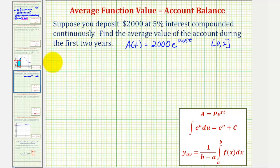Which means in this case, the average value of the account over the first two years would be equal to 1 divided by b minus a, that's 2 minus 0, times the integral of a of t, which is 2,000 times e raised to the power of 0.05t from 0 to 2.